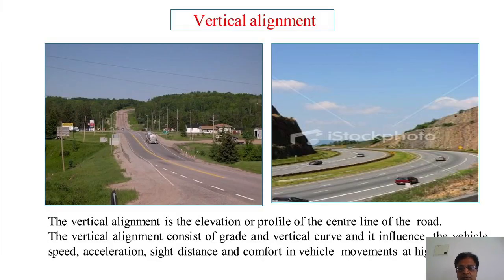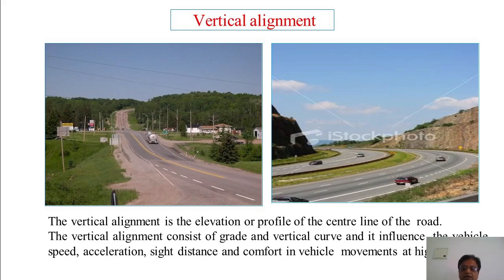Today, let us discuss about Vertical Alignment. The vertical alignment is the elevation or the profile of the centerline of the road. The vertical alignment consists of grade and vertical curve, as it influences the speed, acceleration, sight distance, and comfort in vehicle movement on the highway. In the figure, you can see there is a vertical curve and also a vertical gradient.